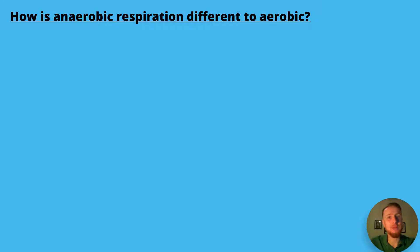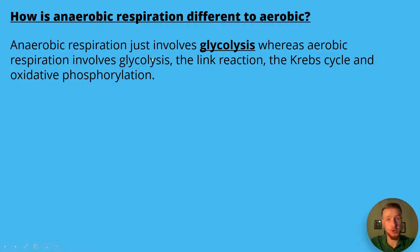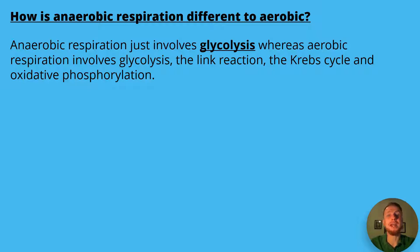So how is anaerobic respiration different to aerobic? Anaerobic respiration just involves glycolysis, whereas aerobic respiration not only involves glycolysis, it also involves the link reaction, the Krebs cycle and oxidative phosphorylation.